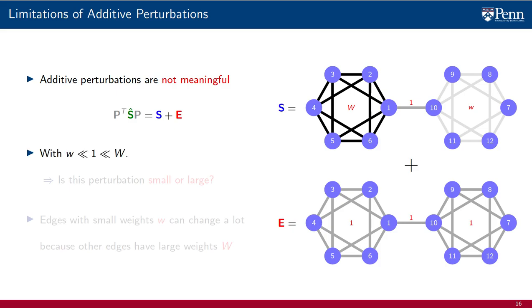If lowercase w is much smaller than 1, and uppercase W is much larger than 1, is this a small perturbation or is it a large perturbation?